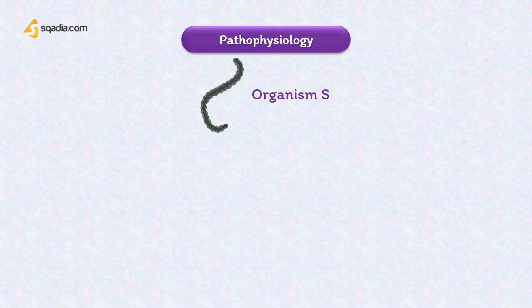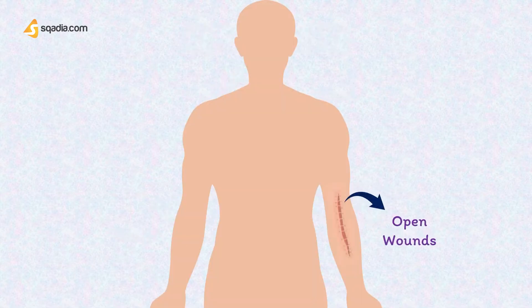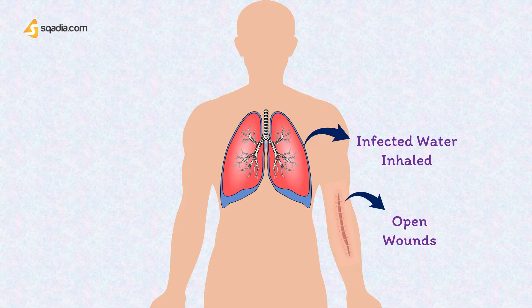When the organism is shed in the infected animal's urine, it can survive in fresh water for up to 16 days and in the soil for almost 24 days. It can then enter the human host through open wounds, mucous membranes, or the lungs if the infected water is inhaled. This infection has a propensity for pregnant women and can have devastating outcomes — it can be transmitted across the placenta, leading to miscarriage in the first two trimesters, and if infected during the third trimester, pregnancy can result in stillbirth or intrauterine death.